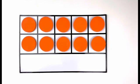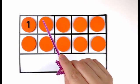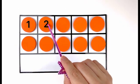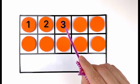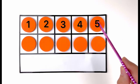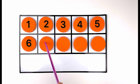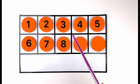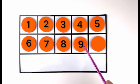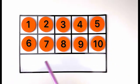Let's count them again. One, two, three, four, five, six, seven, eight, nine, ten. Ten orange circles. Great job!